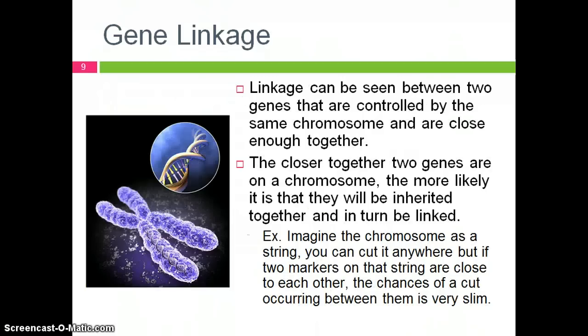Now that the logistics of linked genes have been discussed, we can begin to form a clearer picture of what exactly it means to be linked. Linkage can be seen between two genes that are controlled by the same chromosome and are close enough to each other. The closer together two genes are on a chromosome, the more likely it is that they will be inherited together and in turn be linked. This linkage will remain even if crossing over occurs. For example, imagine the chromosome as a piece of string — you can cut it anywhere, but if two markers or genes on that string are close to each other, the chances of a cut occurring between them is very slim.